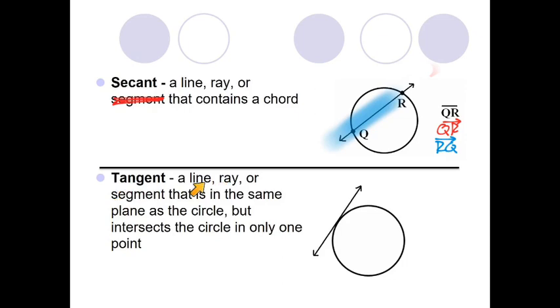So a tangent would be a line, ray, or segment that's in the same plane of the circle but intersects the circle in only one point. Notice these secant rays intersected the circle at two points, Q and R, but our tangent lines intersect the circle at only one point. Know the difference between a secant and a tangent.